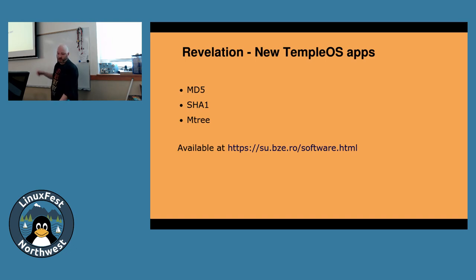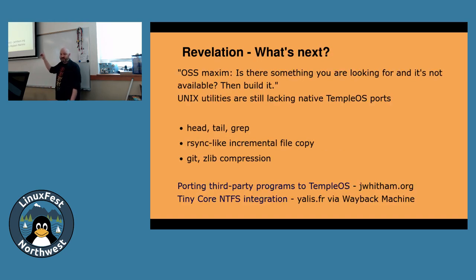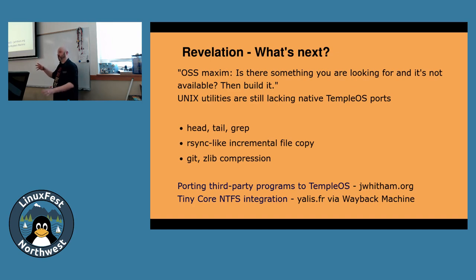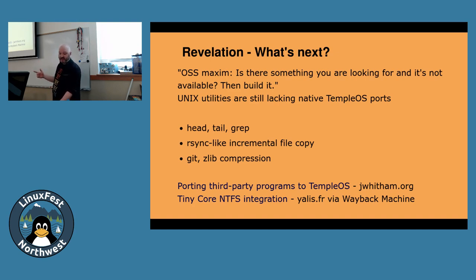Where do we go from here? Remember, in the open-source software world, if there's something you're looking for and it's not available, build it. There are still a bunch of Unix utilities that are lacking — I don't see a good way to integrate things like head, tail, and grep since TempleOS doesn't really use pipes that way. But now that we have checksums, we can do incremental file copying — it would be really cool if someone wants to implement rsync for TempleOS, or something like xcopy or robocopy. I would love to see a Git client — that's really why I'm here. SHA-1 already exists, so let's take a look at zlib compression for TempleOS, because with those two things you can get started building a Git client. There are links for how to port third-party programs to TempleOS and how to do TinyCore NTFS integration.